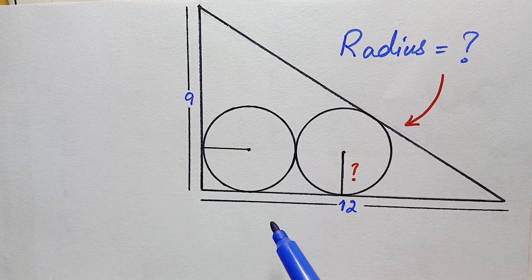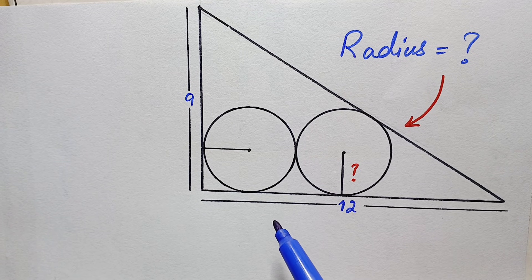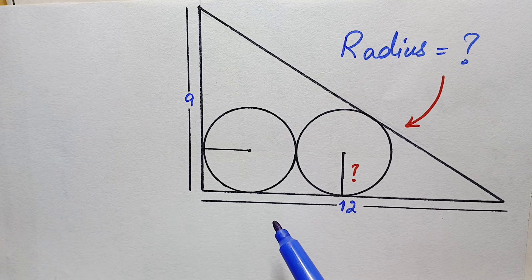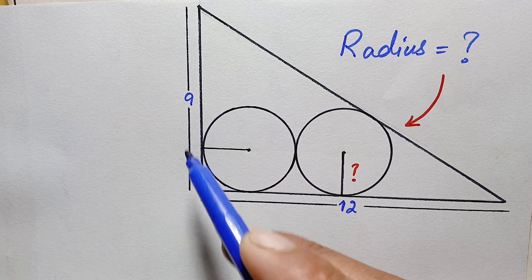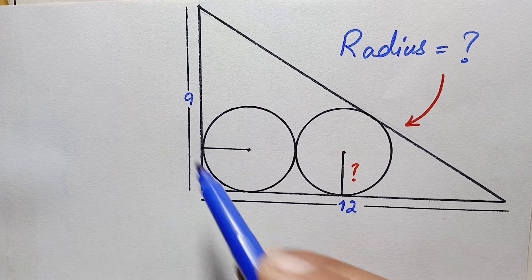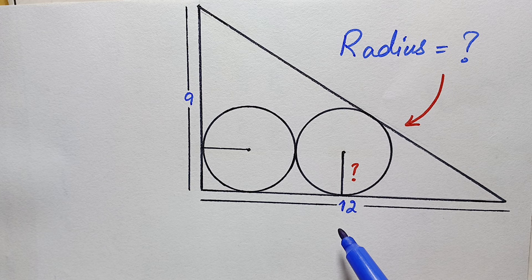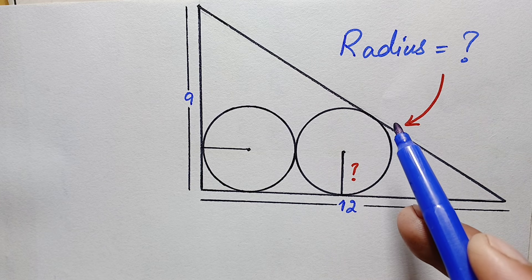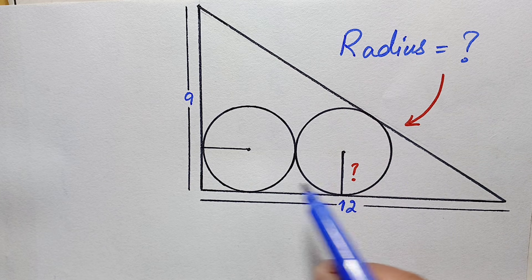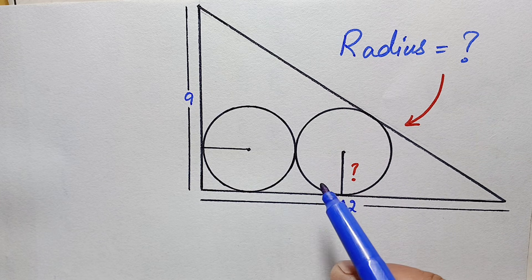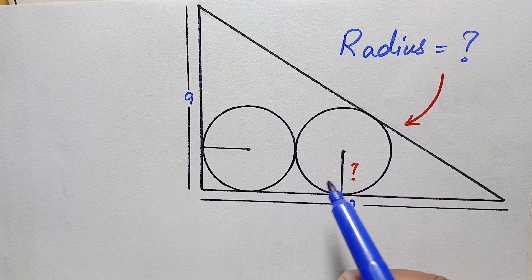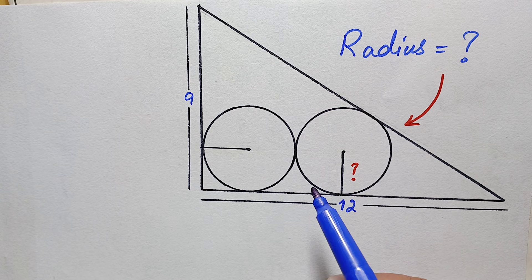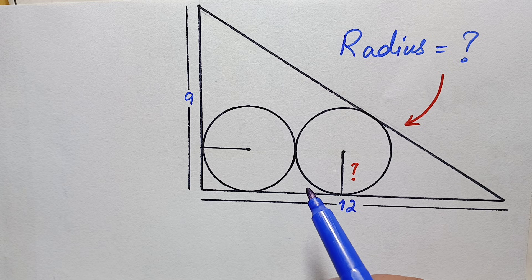Hello everyone, you are welcome. Today we have a very interesting geometry math problem. We are given a right angle triangle whose perpendicular is 9 units and whose base is 12 units. The hypotenuse is not given, and there are two congruent circles inside the triangle. Our target is to find out the radius of each circle.